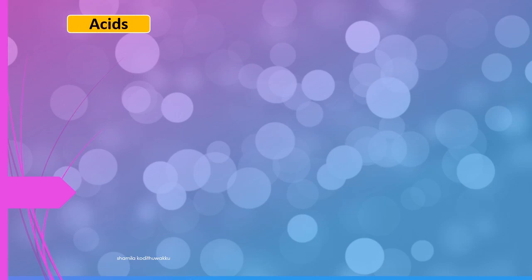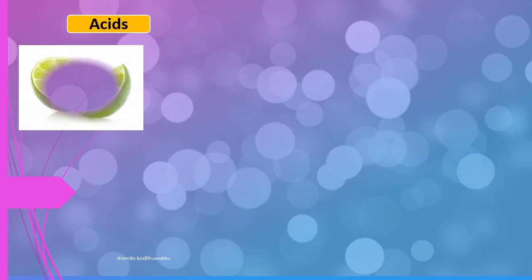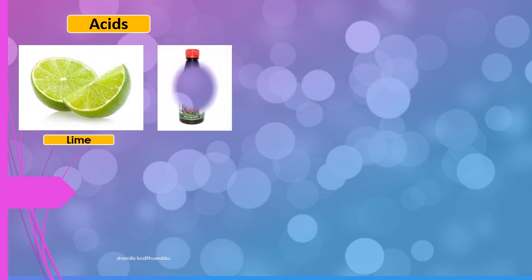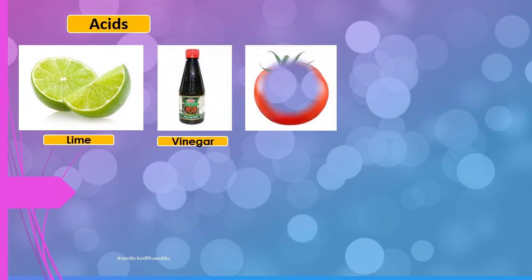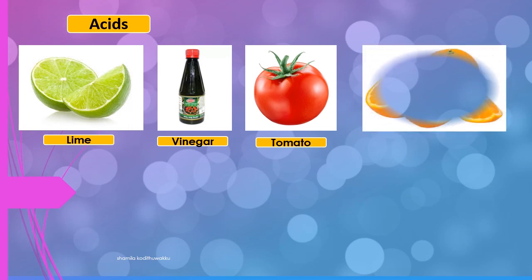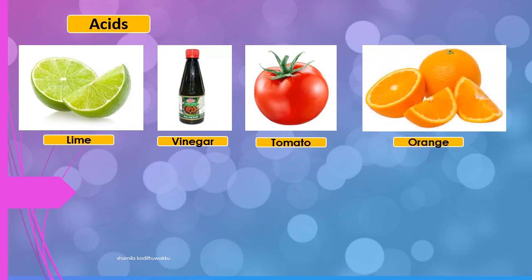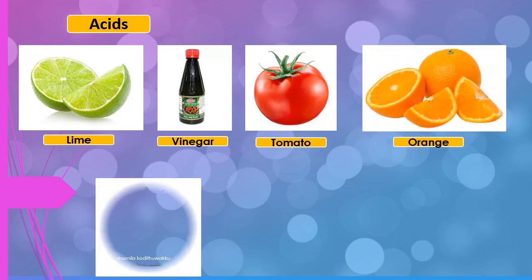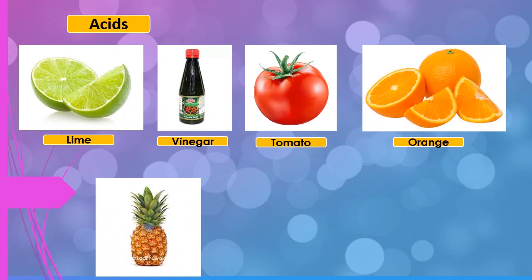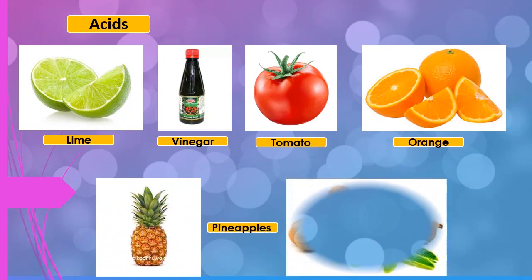What are the examples for acid substances? Lime, Dahi, Vinegar, Tomato, Orange, Tamarind, Pineapple, Anasi, and Ceabala are examples of acidic substances.